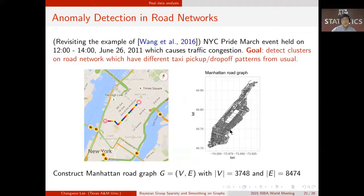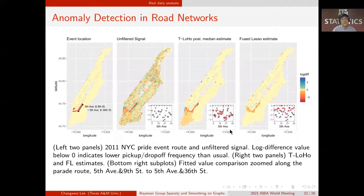The leftmost figure shows the parade route, and the second figure shows the raw data difference of taxi pickup drop-off counts compared to the usual. So it is plausible to assume that most of the traffic in Manhattan will not be affected by the event. So the difference will be 0, so that many difference will be 0, which satisfies the sparse homogeneity assumption.